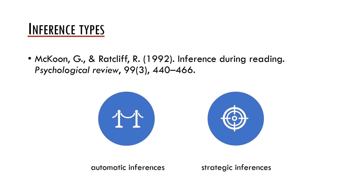Gail McKoon and Roger Ratcliffe in their study 'Inference During Reading' differentiate between two types of inferences. On one hand, there are automatic inferences which are based on easily available information and are necessary for local text coherence. On the other hand, they distinguish strategic inferences which are based on certain goals and depend much more on our real-world knowledge and cultural practice. McKoon and Ratcliffe argue that this distinction is not always clear-cut — it may be so that strategic inferences in certain situations are the same as automatic inferences, and that some strategic inferences may be obligatory, in the sense that the text cannot be completely understood without them.